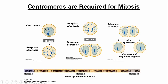Just to point out here: these structures at the end — the little proteins — are called centrioles. Don't get them confused with centromeres. Centrioles are what the microtubules latch onto at the pole of the cell, while the other end of the microtubules latches onto the centromere on the chromosome.